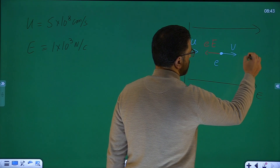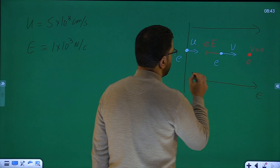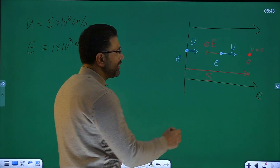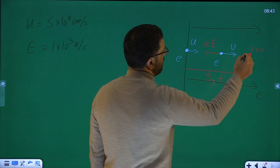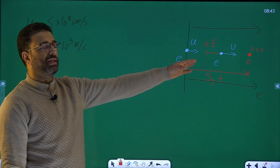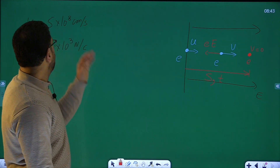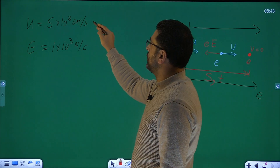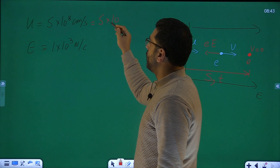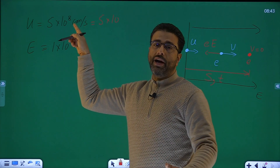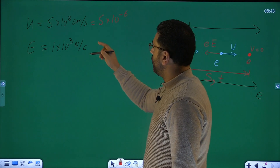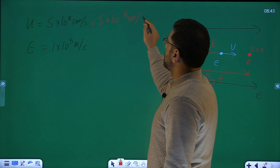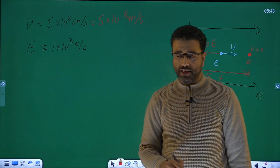Let's suppose somewhere here it stops, so v becomes zero. The distance from entry to stopping point is what we call stopping distance, and the time taken is stopping time — both of which we need to find. Initial speed is 5 into 10 to the power 8 centimeter per second. Converting centimeters to meters, that becomes 5 into 10 to the power 6 meter per second. This is already given in SI units.